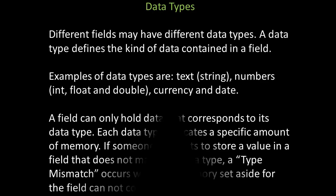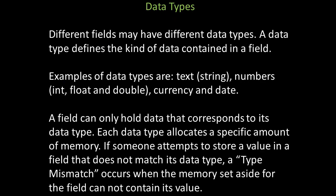Different fields may have different data types. A data type defines the kind of data contained in a field. Examples of data types are text like a string value, numbers like an integer or a float or a double, currency, and date objects. A field can only hold data that corresponds to its data type, and each data type allocates a specific amount of memory. If someone attempts to store a value that does not match a field's data type, a type mismatch occurs when the memory set aside for the field cannot contain the value.